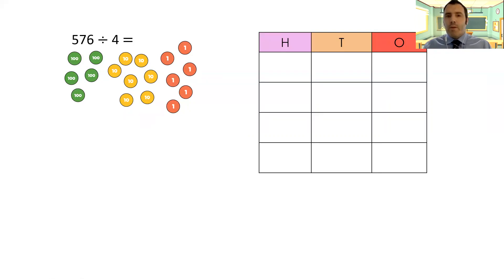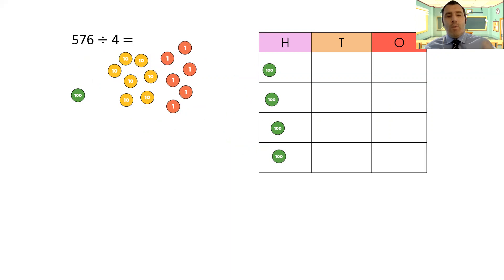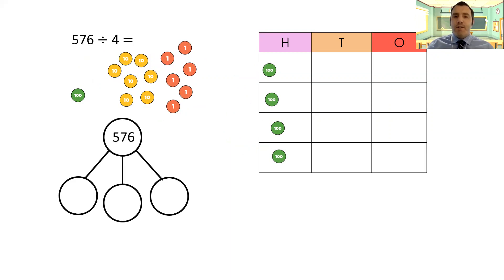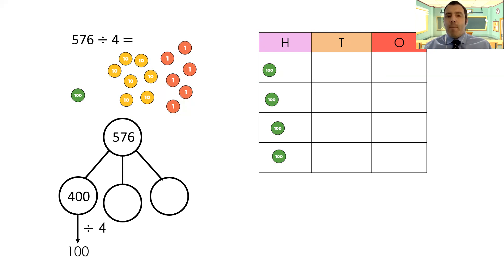I'm going to take my four hundreds and put them in the hundreds column. What do I do with the hundred I've got left? I can't magically split it up into four new hundreds. What I can do is exchange it. I'll show you this using a part-whole model too. I've taken four lots of 100 out already — that's gone in one part of my part-whole model. Divided by four, I get 100 in each row, so one hundred in each of the four rows.